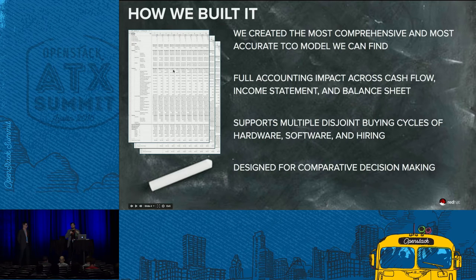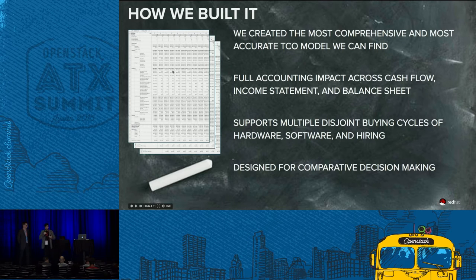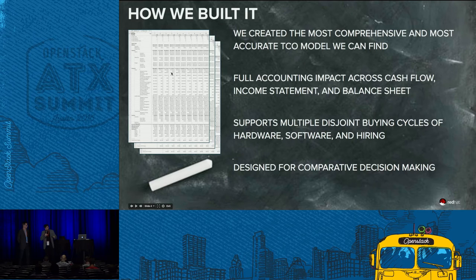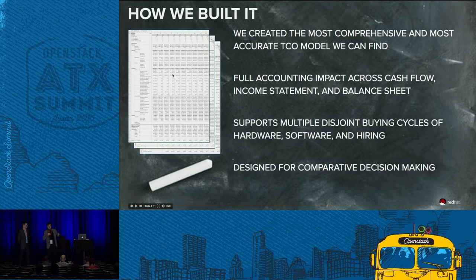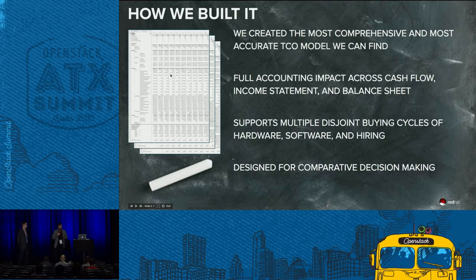We tried to build the most comprehensive TCO model for a private cloud, able to act like a scorecard to help you do comparisons. Because it's transparent, you can use your own numbers inside the model. In short, we built a tool able to provide numbers to be crunched by financial guys, taking into account things like the impact on income statement, balance sheet, and cash flow. It's been built by IT guys who know that hardware and people have different cycles within the company.